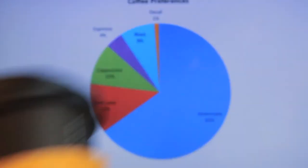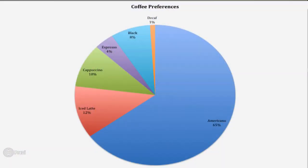Take this pie chart as an example. 65% of participants are said to drink Americano, but it is not clear exactly how many people make up that 65%. So although they are easily understood, the exact values are not shown, which may lead to false impressions.